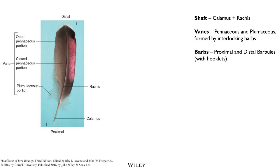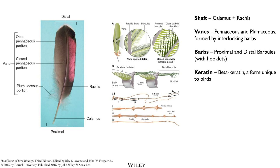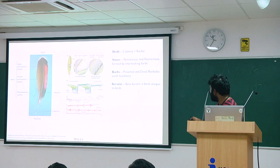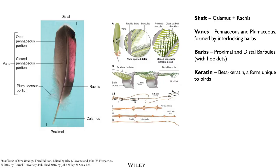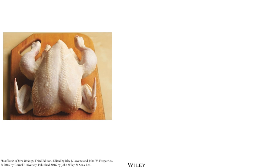The plumaceous parts are ones that don't have form — like those feathers that are all over the place. And then you have the ones that are nicely closely interlocked, which is the penaceous part. Feathers are made up of keratin, like nails or hair. The form of keratin in a feather is unique to birds — beta keratin is there in both birds and reptiles, but this particular form is unique to birds.